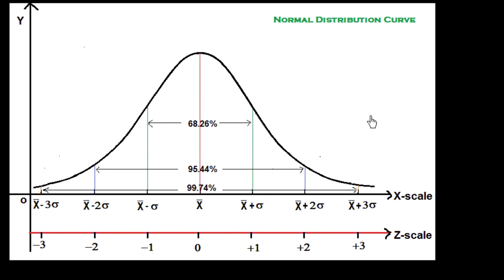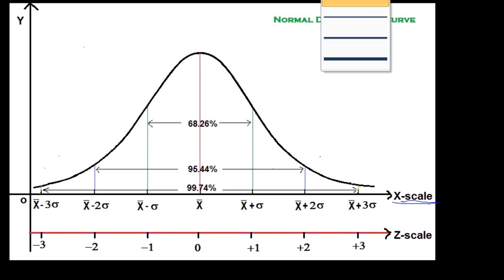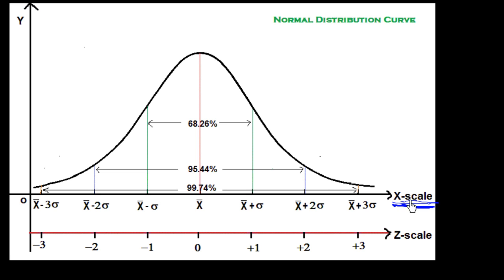Now looking at the detailed normal distribution curve, x-bar is the line of symmetry — it is the bell-shaped normal curve. The x-axis is also called the axis scale. The first inflection point on the right side corresponds to x-bar plus sigma on the x-axis. The second inflection point gives x-bar plus 2 sigma, and the third gives x-bar plus 3 sigma. On the left side we have x-bar minus sigma, x-bar minus 2 sigma, and x-bar minus 3 sigma.